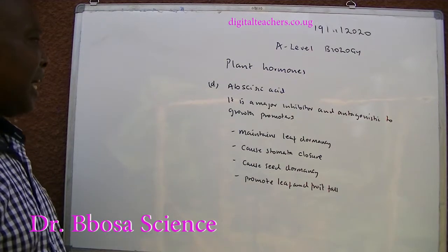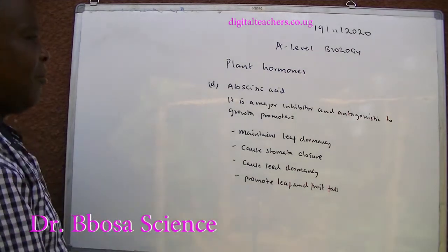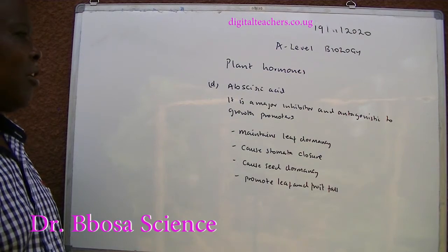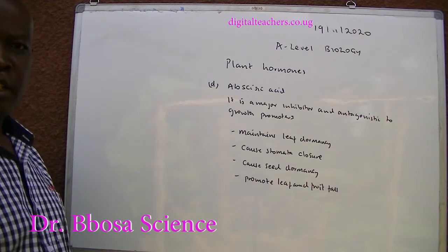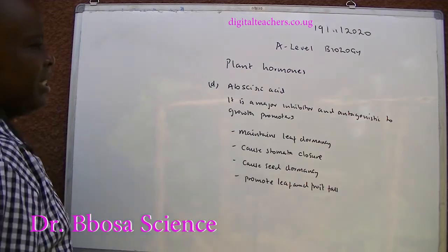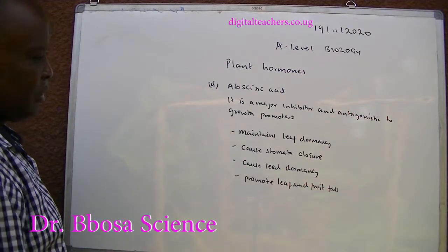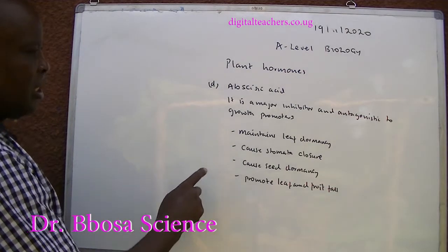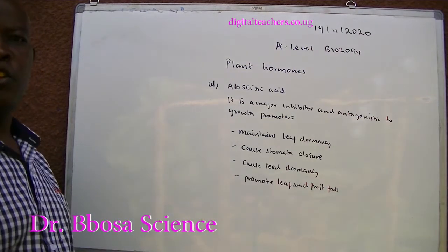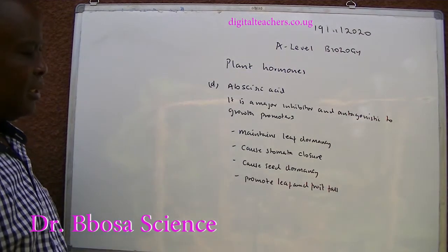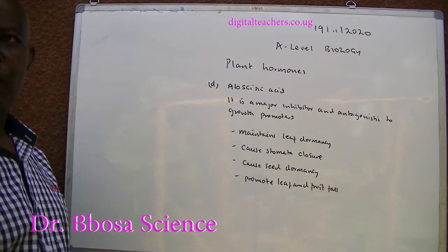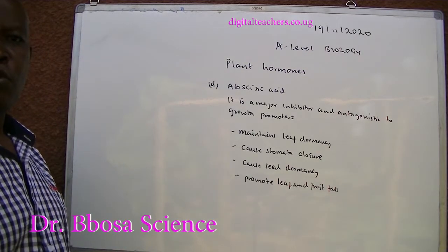Abscisic acid is a major inhibitor and antagonistic to growth promoters. Its roles: one — maintains seed dormancy; two — causes stomatal closure; three — causes seed dormancy; four — promotes leaf and fruit abscission.